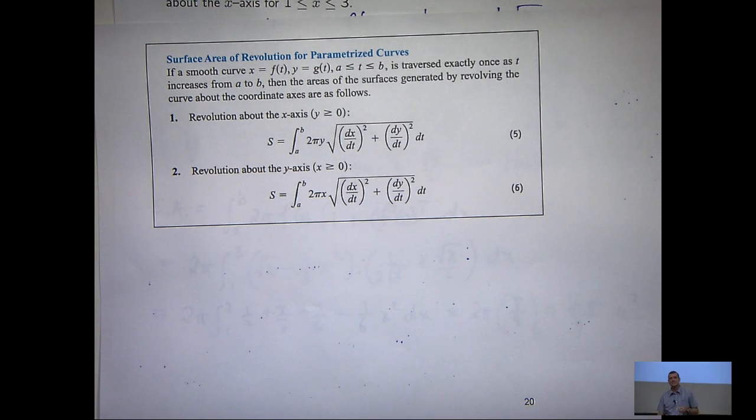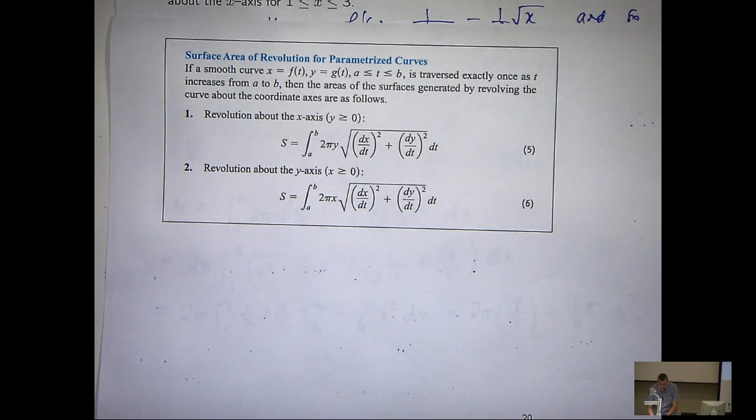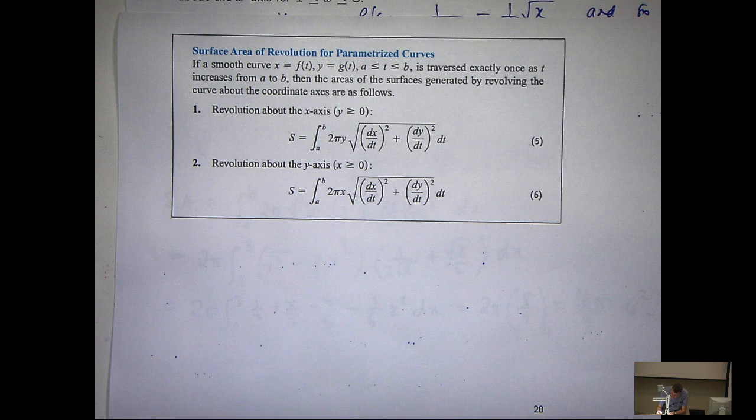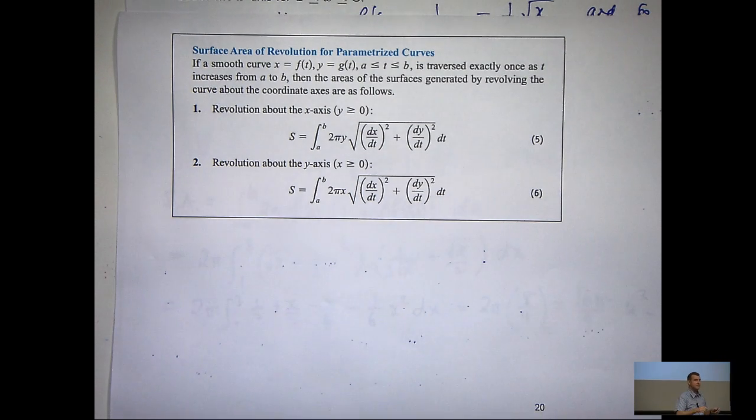There are also formulae for calculating the area of revolution when you have some sort of parameterization. It's very similar to the other one except you've just got dx/dt and dy/dt here instead of say f prime, one plus f prime all squared. We get those in the exam, again, unlikely, unlikely. No guarantees. My advice is to look at say last year's exam or the year before's and see what happened.